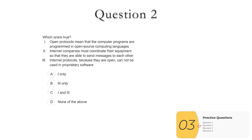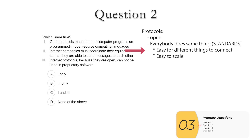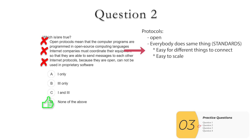Question two — which is or are true? One: open protocols means computer programs are programmed in open source languages — not true; you can program in any language, but how you connect must follow standards. Two: internet companies must coordinate their equipment to send messages to each other — not true; the equipment can be different. Three: internet protocols, because they are open, cannot be used in proprietary software — not true; protocols make it easy for anybody to connect with anybody. Answer is D: none of the above.